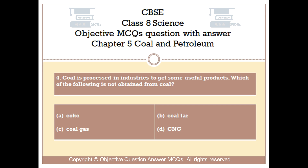Question number 4. Coal is processed in industries to get some useful products. Which of the following is not obtained from coal? Option A: Coke. Option B: Coal tar. Option C: Coal gas. Option D: CNG.